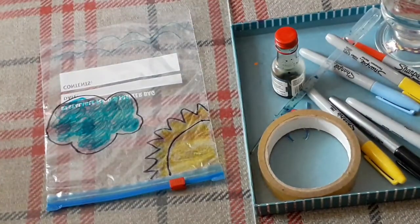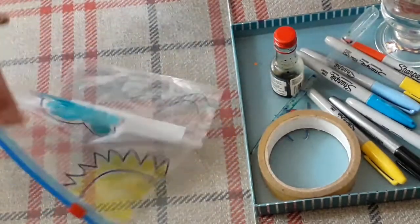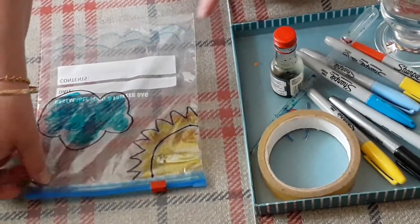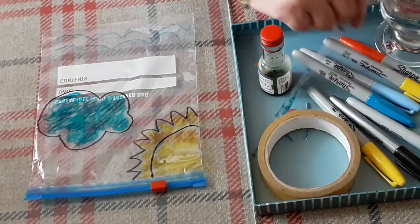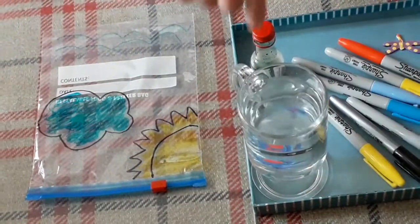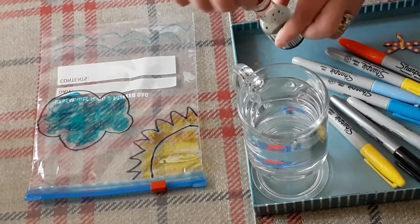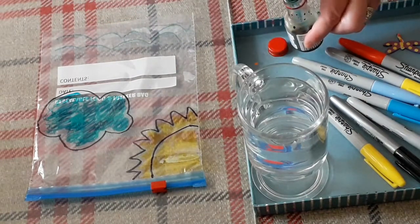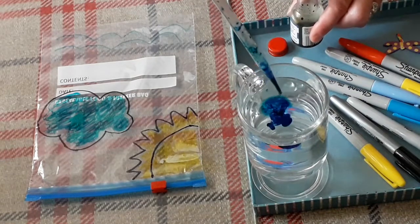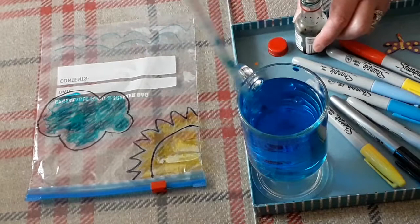So once you've got it all colored in and you're happy with it, we then need to add our water. So I'm going to add a little bit of blue food coloring. Add a few drops of blue food coloring and swizzle it around.